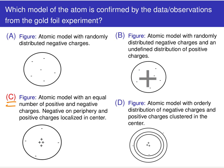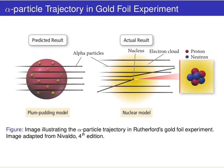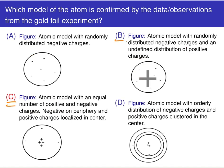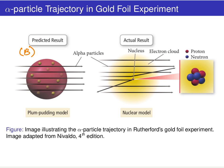It is model C that Rutherford's gold foil experiment points towards — the existence of a localized region of positive charge, which we now call the nucleus of the atom. Let's look at a prettier picture to illustrate this.